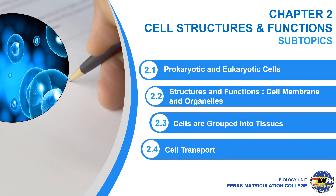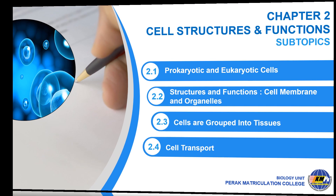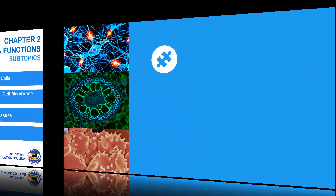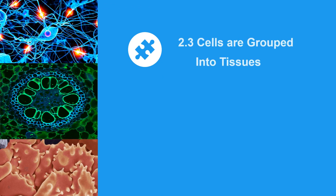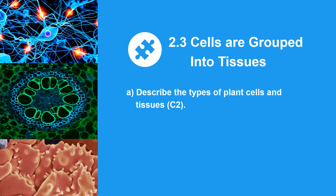Hello everyone! Let's continue with the third subtopic of the second chapter: cell structures and functions on plant tissues. Section 2.3 — cells are grouped into tissues. Part A: describe the types of plant cells and tissues.